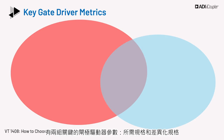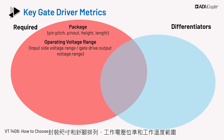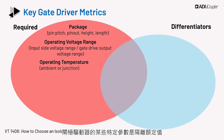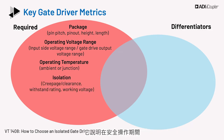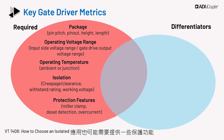There are two groups of key gate driver parameters: the required specs and the differentiating specs. Similar to common considerations for most electronic parts, the required specs for isolated gate drivers are package size and pin out, operating voltage levels, and operating temperature range. Some parameters specific to gate drivers are isolation rating, which states the voltage that can be applied between the input and output side across the isolation barrier during safe operation. Creepage is another parameter, which indicates the distance between the isolated pins of the package and is related to the safety specs. There are also some protection features which may be required in an application.